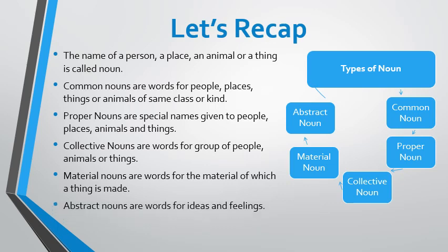The last type is abstract nouns. Abstract nouns are words for ideas, emotions, feelings, and qualities — things that we know about ideas, feelings, and emotions but that cannot be physically touched or seen.